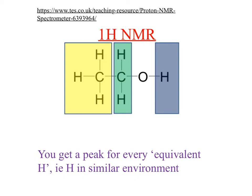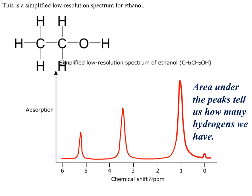If you turn to page 4 in your notes you can see the structure for ethanol. Colour code those hydrogen atoms the same as I have on the screen — yellow hydrogen atoms, green ones, and blue ones. We have colour coded them to show the groups of chemically equivalent hydrogens. The yellow hydrogens are all joined to a carbon which is bonded to another carbon. The green ones are bonded to a carbon which is bonded to a carbon but also bonded to an oxygen. The blue ones are just bonded to the oxygen. So the yellow ones are chemically equivalent — they have the exact same chemical environment — same for the green ones, same for the blue ones. You'll see why this is so important just now.